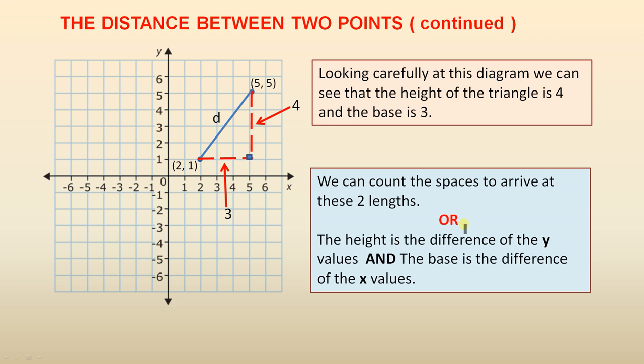Or, the height is the difference of the y values, and the base is the difference of the x values. So if you take the height here, which is 4, the difference of the y values is 5 minus 1, that gives you 4, and the difference of the x values is 5 minus 2, that gives you 3.